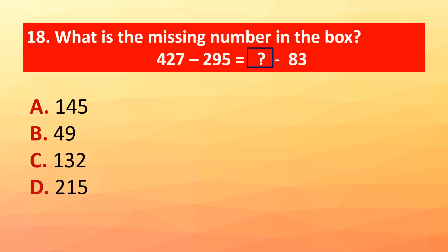Question 18: What is the missing number in the box? 427 minus 295 equals question mark minus 83. The correct answer is option D: 215.